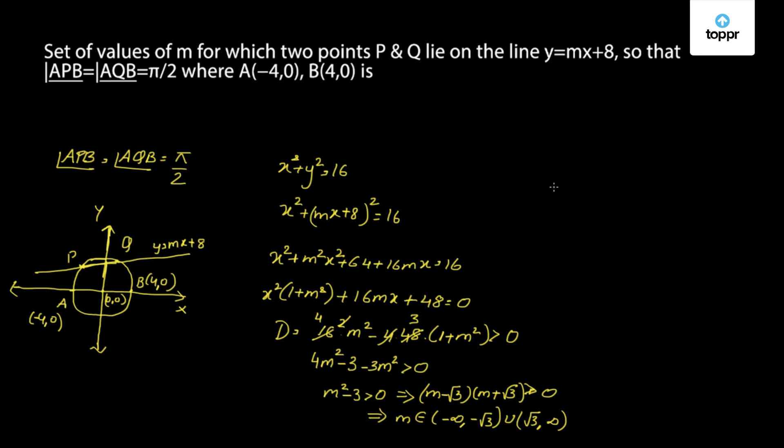We have to ensure that points P and Q should not be points A and B. That means if A(-4, 0) is a point on the line y = mx + 8, then it must satisfy the equation. So we get 0 = -4m + 8, which gives us m = 2. Similarly, B is (4, 0). If it is a point on the line, then we get 0 = 4m + 8, which implies m = -2.